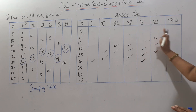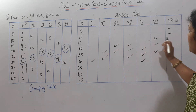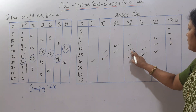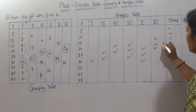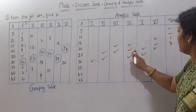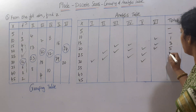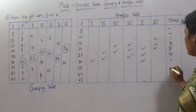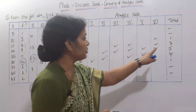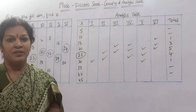Now we total up the tick marks in the analysis table: X equals 5 — nil; X equals 10 — nil; X equals 15 — 1 tick; X equals 20 — 3 ticks; X equals 25 — 5 ticks; X equals 30 — 4 ticks; X equals 35 — 1 tick. The number with the highest total is 25 with 5 ticks. So mode is 25.